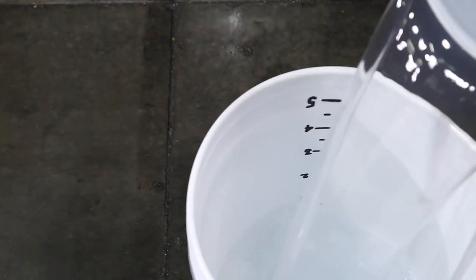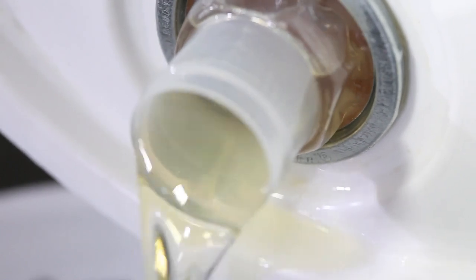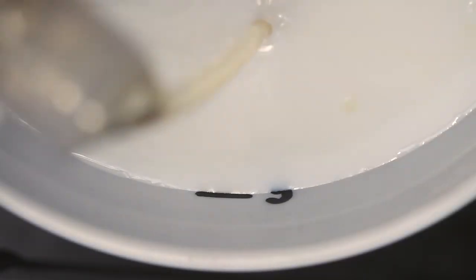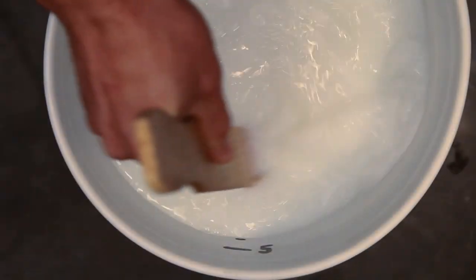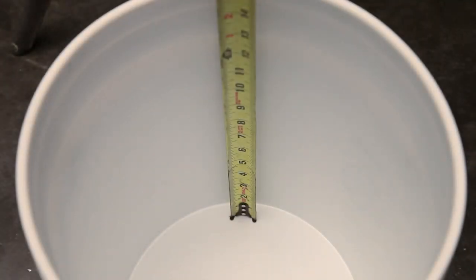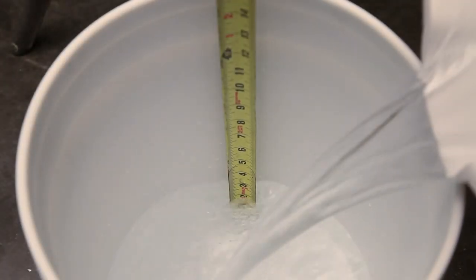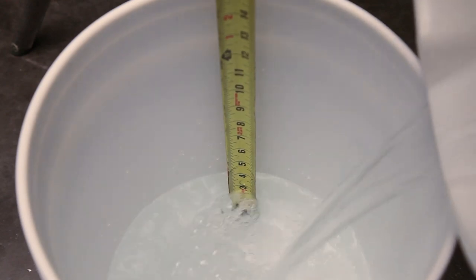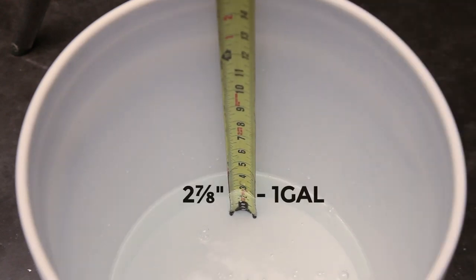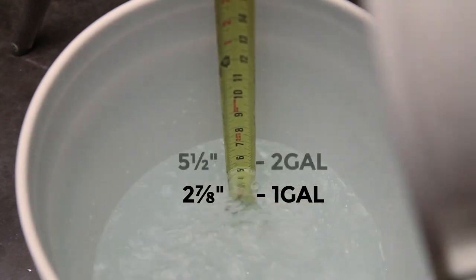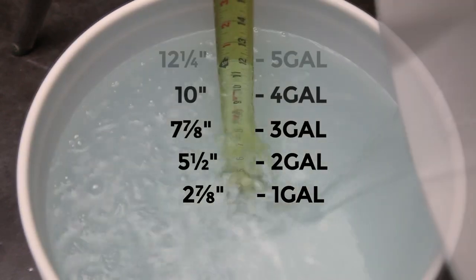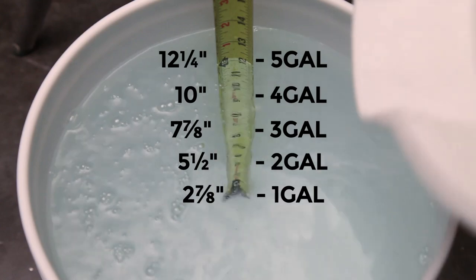If you're going to mix your coolant manually, a graduated 5-gallon bucket can be used to measure the water and concentrate you'll be mixing. These buckets are readily available for purchase online, or you can make your own bucket. A simple tip to make your own is to pour one gallon at a time into your bucket. Measure each 1-gallon increment up to 5 gallons, and then mark the bucket at the measured spacing.